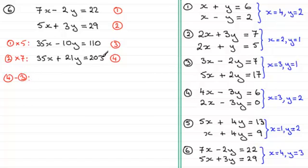The reason I'm doing it that way around is because I'm looking at the 203. It's bigger than the 110. But it's up to you. You could do three take away four. You should get exactly the same answer for y as I do.